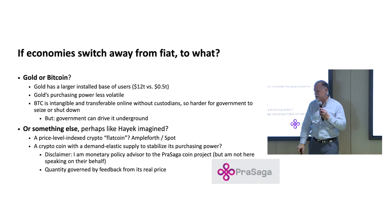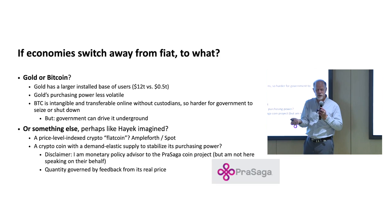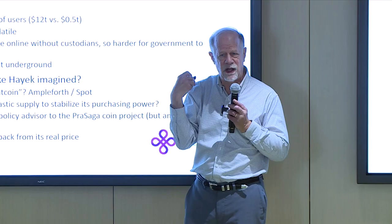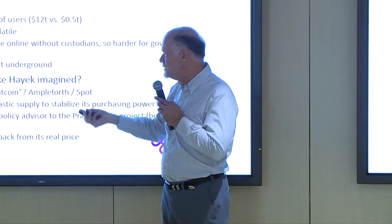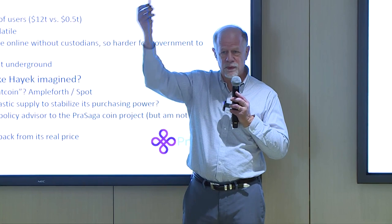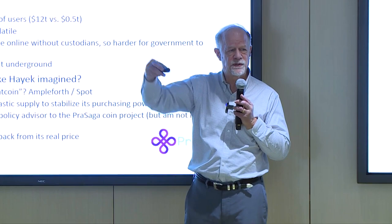Hayek's vision of competing alternative currencies is still alive. People are working on cryptocurrencies with more stable purchasing power. Stablecoins are pegged to the dollar or euro, so they're no more stable than those currencies. An alternative vision is 'flat coins': if dollar inflation rises, the coin's value rises proportionally, keeping purchasing power in terms of goods and services constant. How to design one of these well is still an open question.